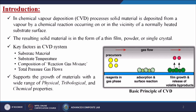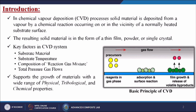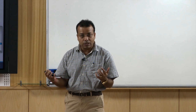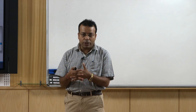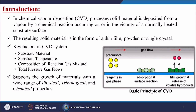The key factors in the CVD system are: first, the substrate material which we are going to coat or modify; next, the substrate temperature — what temperature it can sustain without changing its physical or chemical properties; then the composition of the reaction gas mixture — whether a single gas or multiple gases are used; and finally, the total pressure and gas flows. This supports the growth of materials with a wide range of physical, tribological, and chemical properties.